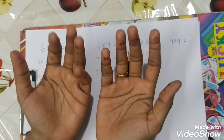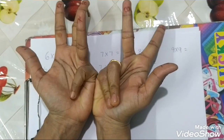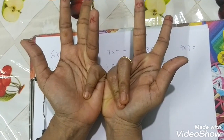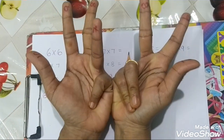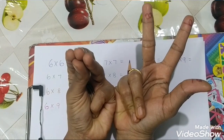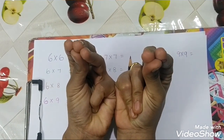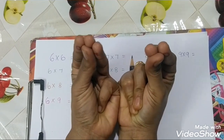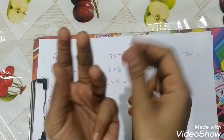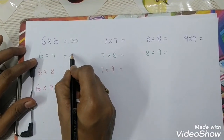For 6 times 7: show finger 6 on one hand and 7 on the other. The closing finger value is 30. Open fingers: 4 on this hand and 3 on this side. So 4 times 3 equals 12. Then 30 plus 12 equals 42. So 6 times 7 are 42.